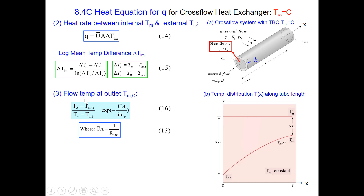If you are interested in the flow temperature at the tube outlet, the equation relates it to the overall heat transfer coefficient U, area A, mass flow rate m-dot, and the specific heat Cp.